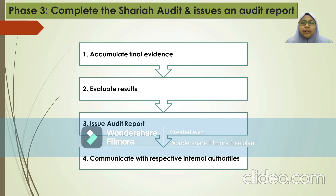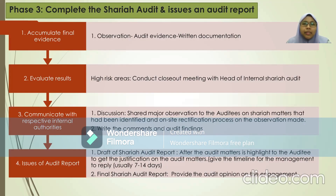The last phase is to complete the Sharia audit and issue an audit report. In this phase, there are four processes. First, the Sharia auditor accumulates all audit evidence based on their findings and observations, then writes it in formal documentation. Next, they evaluate results based on risk areas — for example, if there is a high risk area, they conduct a close-out meeting with the Head of International Sharia audit to communicate findings. They will share major observations with the auditee on Sharia methods identified and provide an on-site rectification process. Then they write their comments and audit findings based on the discussion.